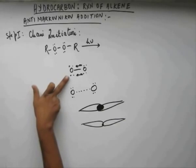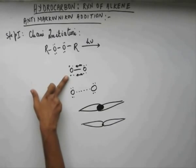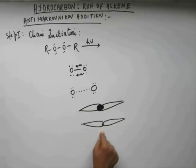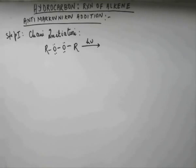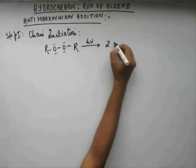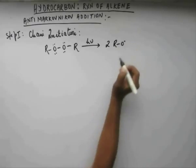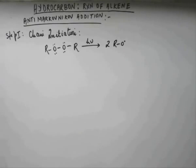So to decrease the repulsion, the distance between nuclei increases, but with that increased distance, the extent of overlapping also decreases. So the bond between oxygen single bond oxygen is a weak bond because of poor overlapping. Now since it is weak, it will break easily. So when radiation is given, it breaks and forms RO dot. This is the first step of the reaction.